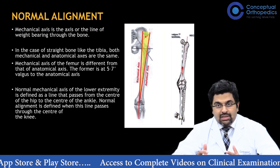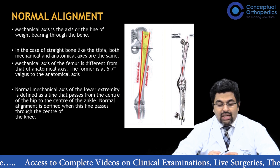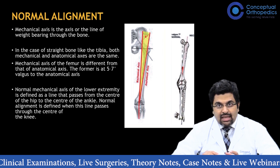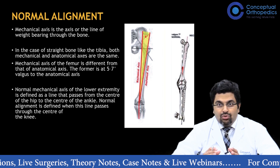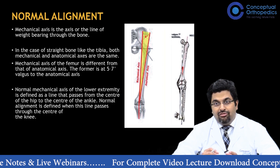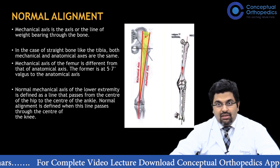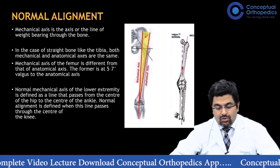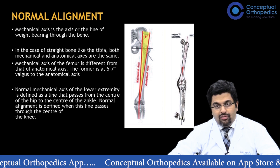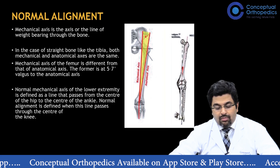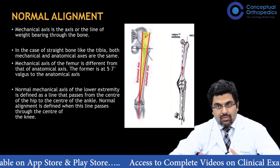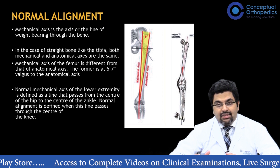Before proceeding to surgical steps, we must understand normal alignment to plan bone cuts. The mechanical axis is the line of weight bearing through the bone. When the bone is straight — as in the tibia — mechanical and anatomical axes are the same. In the femur, they differ: the mechanical axis is approximately five to seven degrees valgus relative to the anatomical axis. The anatomical axis runs from the tip of the trochanter to the apex of the intercondylar notch.